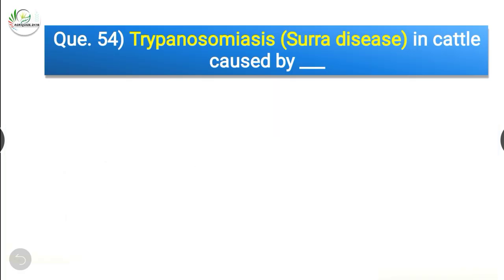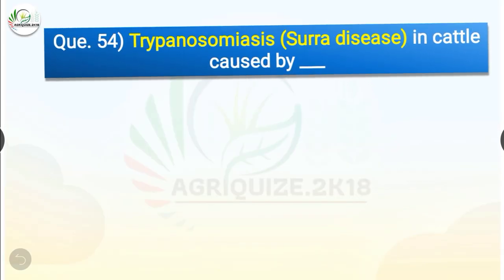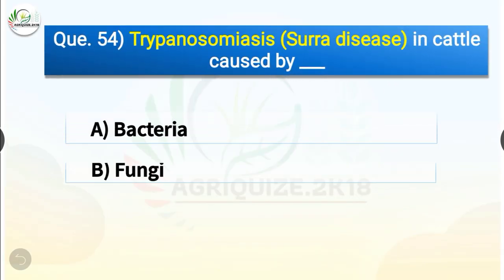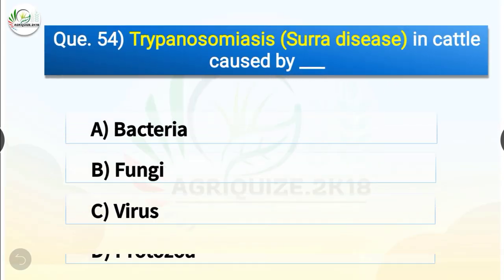Question number 54. Trypanosomiasis or Surra disease in cattle is caused by dash. The options are bacteria, fungi, virus or protozoa. The correct answer is option D, protozoa. So Trypanosomiasis or Surra disease in cattle is caused by protozoa.